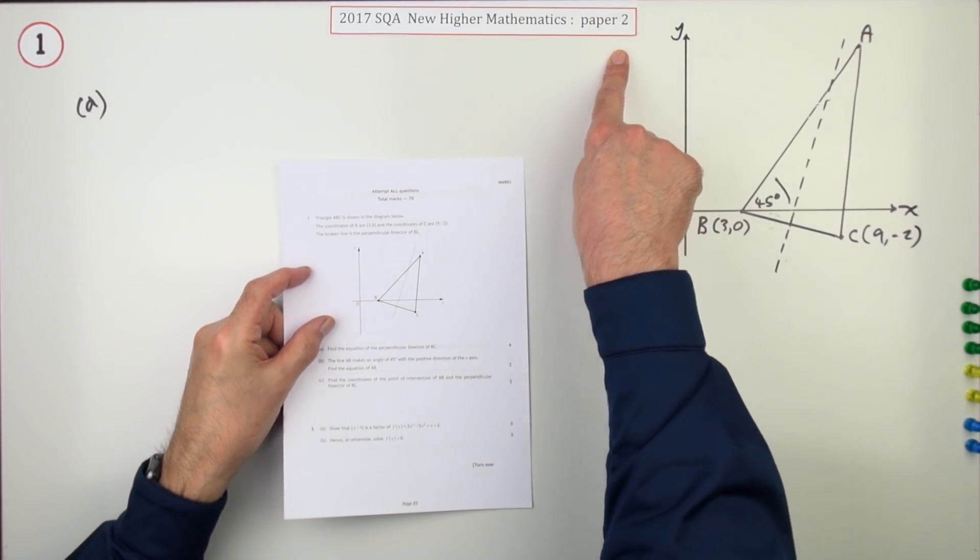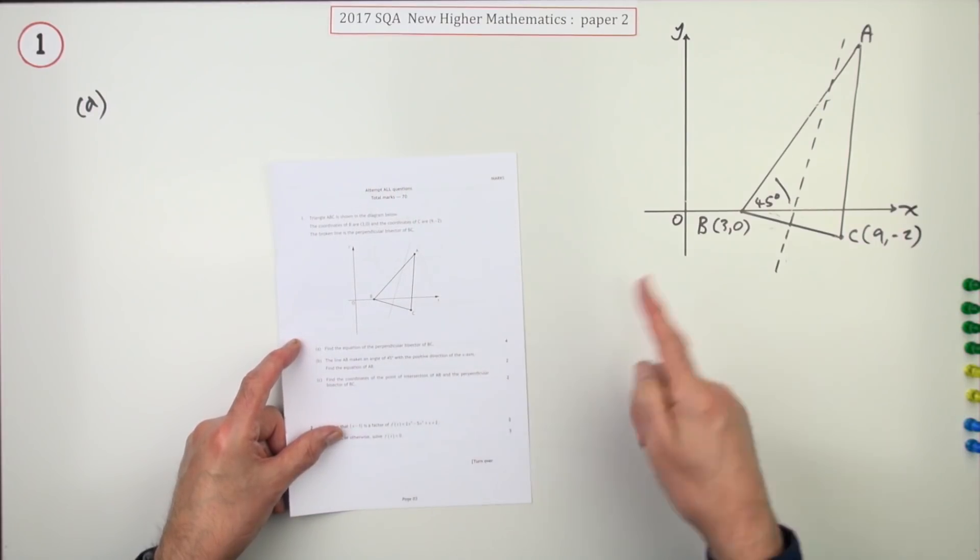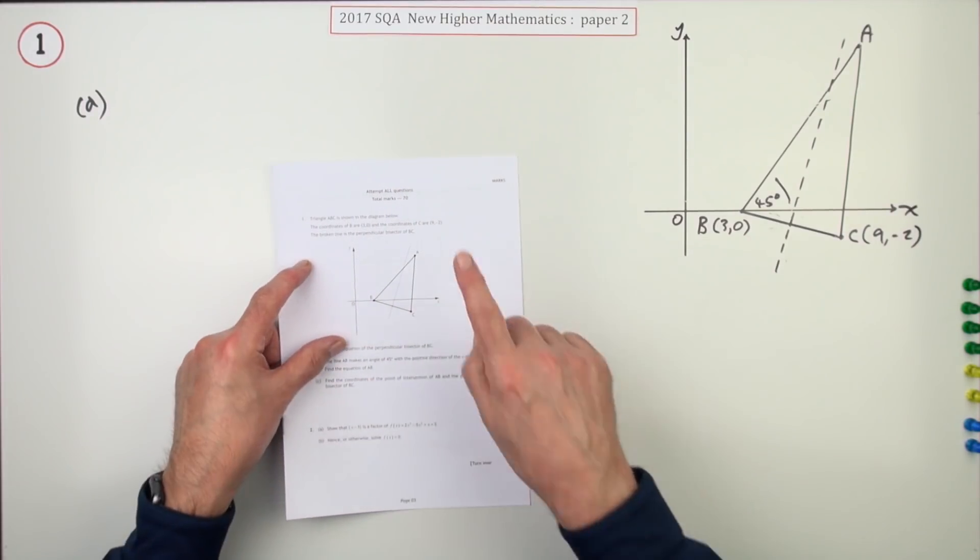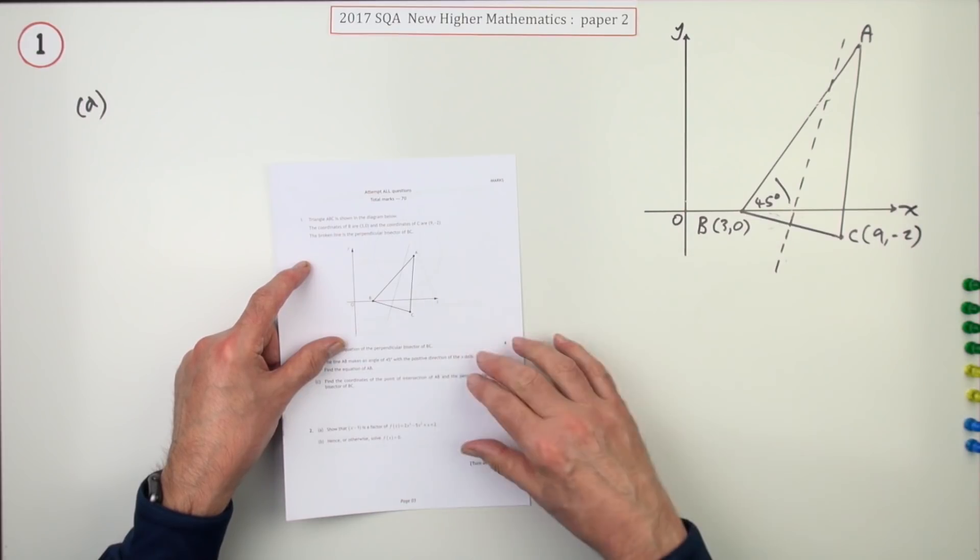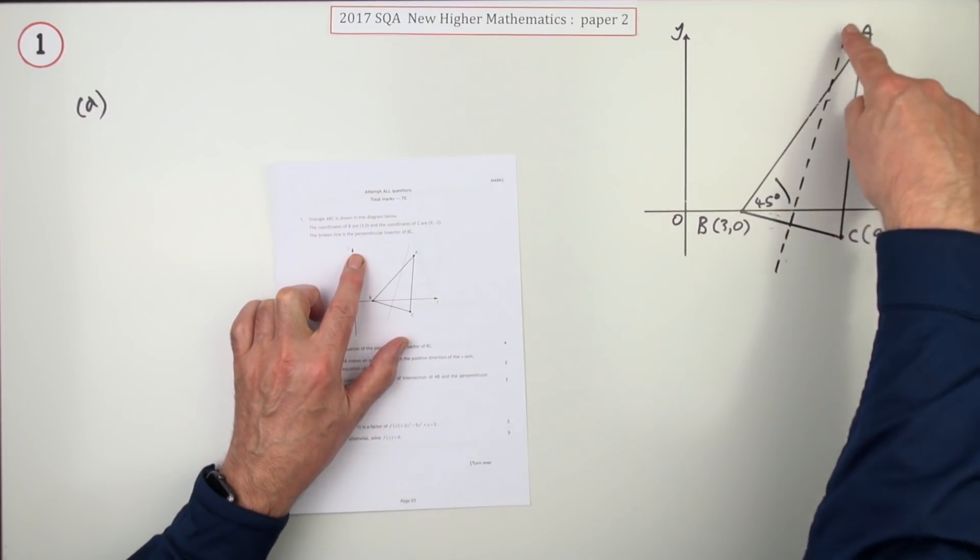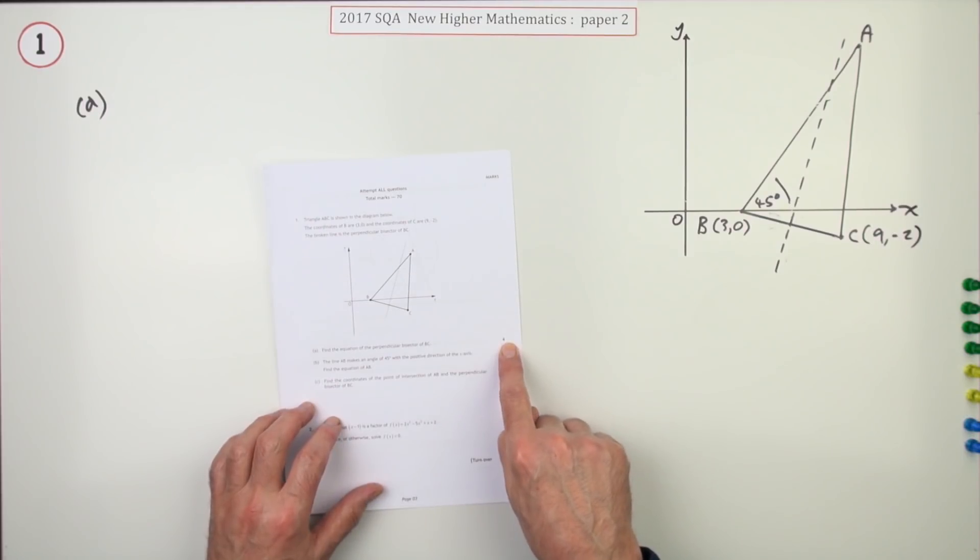So question one then, the first one from paper two of the 2017 New Higher Maths. Here we go, eight marks for lines in a triangle. You're given this triangle and two points on it here, B and C, and you're told that this dotted line, this broken line here, is the perpendicular bisector of BC. The first part A, for four marks, is what's the equation of that perpendicular bisector?